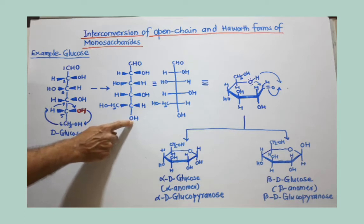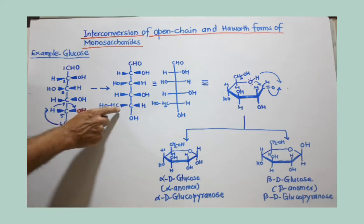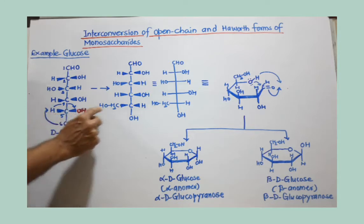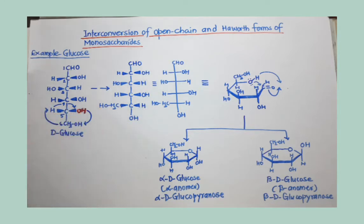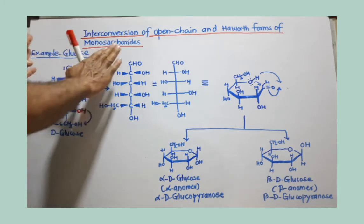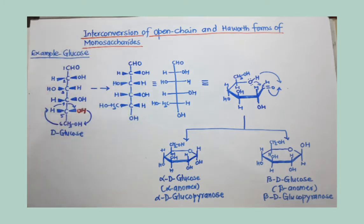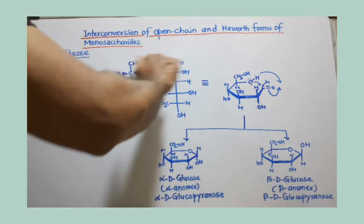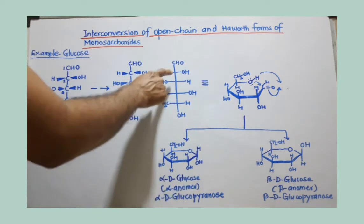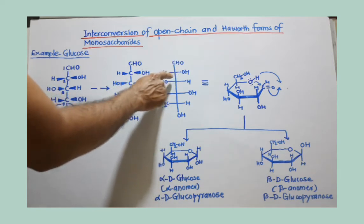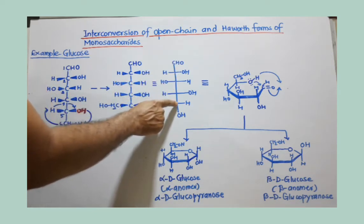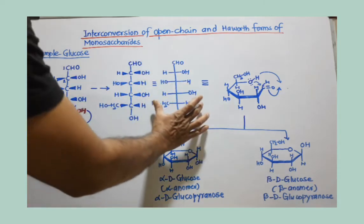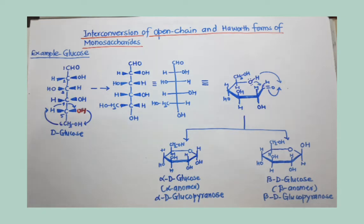OH is taking its new position — CH2OH is coming here and H is going to the position of OH. Now, this is a Fischer projection formula. In a Fischer projection formula, we draw one vertical line and all horizontal lines, and at the point of intersection of two lines there is a chiral carbon. So there are four chiral carbons here. This is the Fischer projection formula for glucose, or D-glucose.